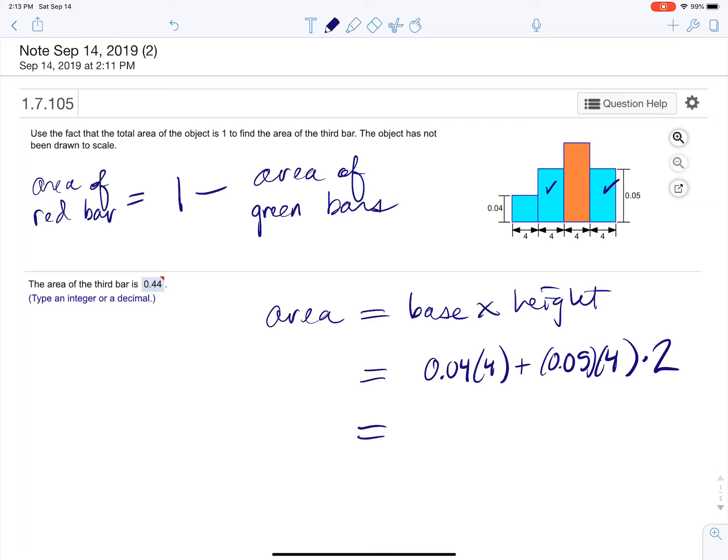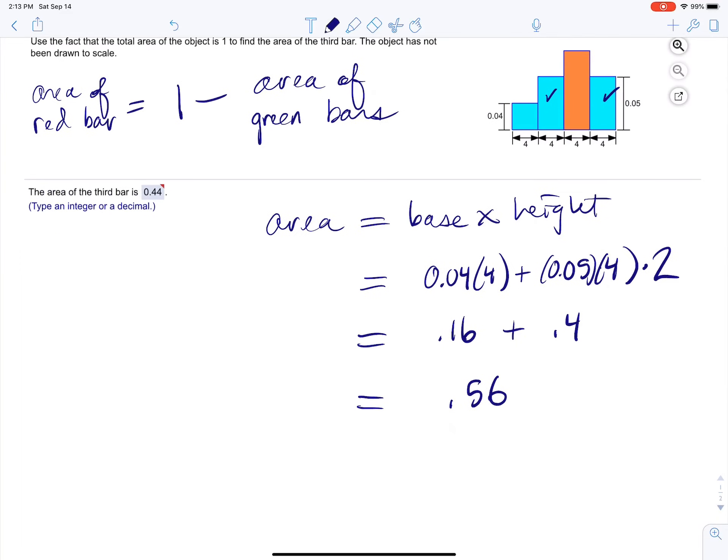So that's going to be my total. That's going to be the area of all the green or blue bars. So what's this? 0.16. What's this? Plus 0.4. 0.4 seems right. This is about 0.56.